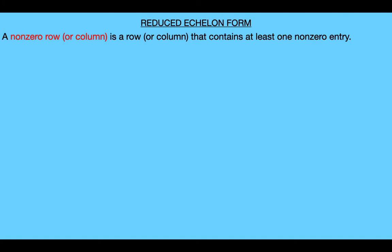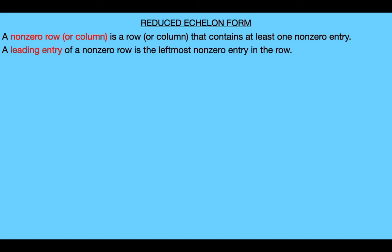Before I give the properties that a matrix needs to have to be in reduced echelon form, let me first give two preliminary definitions. By a non-zero row we just mean a row that contains at least one non-zero entry. And we define the leading entry of a row to be the leftmost non-zero entry in that row.